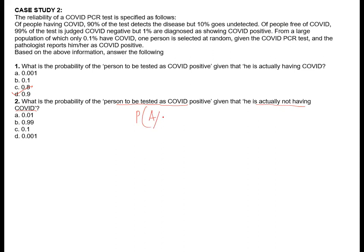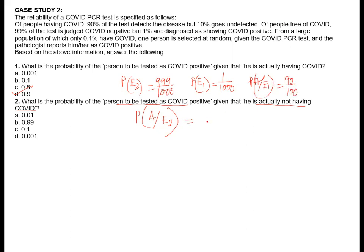Part 2: probability of testing positive given not having COVID — showing positive but actually negative. We have already written P(A|E2) = 1 by 100, which is 0.01. So option A is the answer to this question.